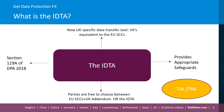Organisations are free to choose between option 1, which is using the IDTA, or option 2, which is using the EU SCCs with the UK addendum. So far, there has been no indication from the ICO that one option may be more appropriate than the other for certain types of transfers or for certain types of organisations. Regardless of which option organisations choose, they will have to comply with the requirement to carry out a transfer impact assessment or, using the ICO's terminology, a transfer risk assessment.